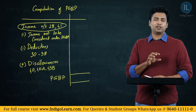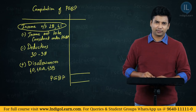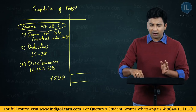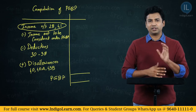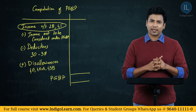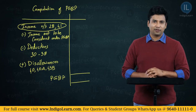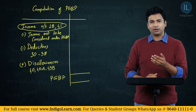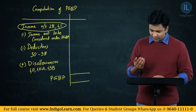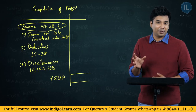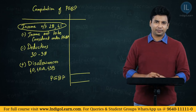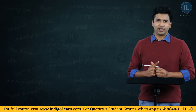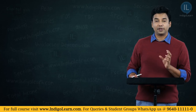Let me rephrase this whole computation in a simple format. I'll call it two methods: the direct method and the indirect method. Overall, you take income to be included under section 28 and 41, minus deductions allowable from section 30 to 38, and add back disallowances given by section 40, 40A, and 43B. This is the overall structure of PGBP. Let us now understand how to do the computation in the exam.